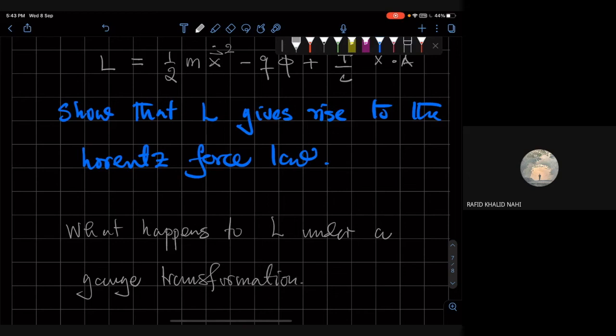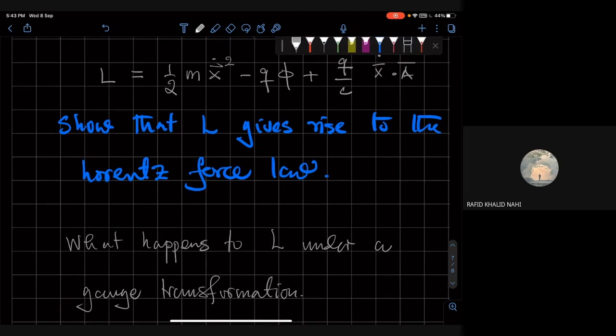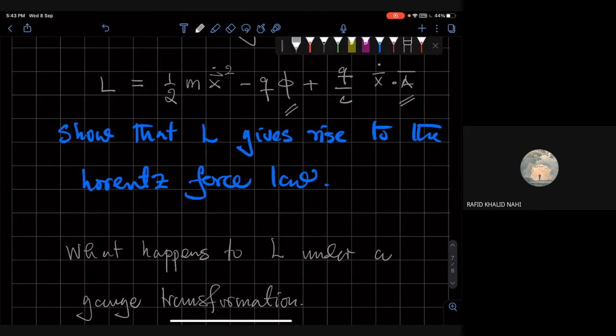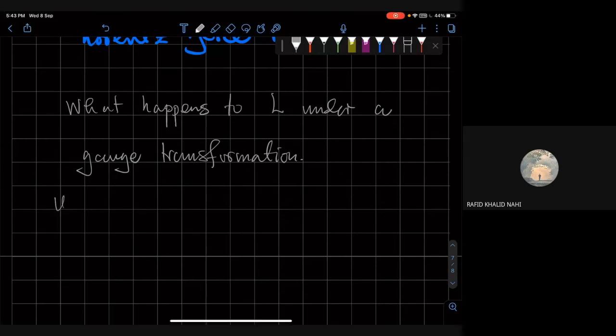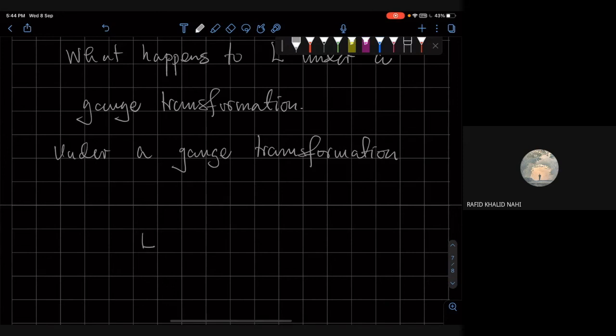Because since these guys are not invariant quantities, they change under gauge transformation, then the Lagrangian is not unique, right? If the Lagrangian is not unique, then the Lagrangian, my Lorentz force law is not unique. And therefore, we are in trouble because what happens? Now, you can show very easily that under a gauge transformation, the Lagrangian changes by a total time derivative.